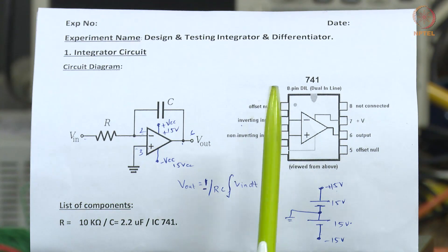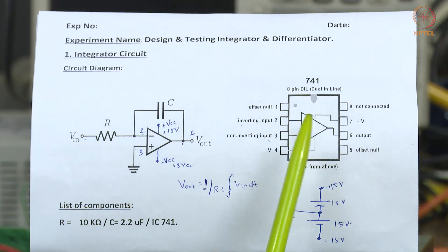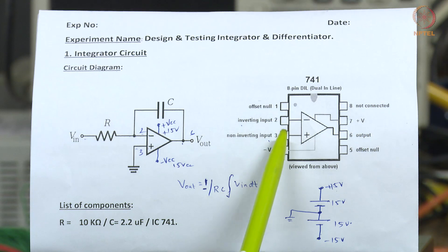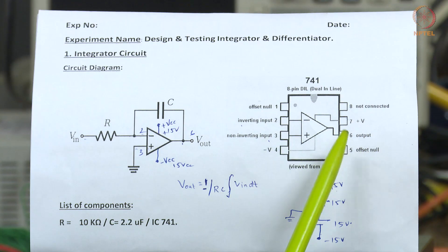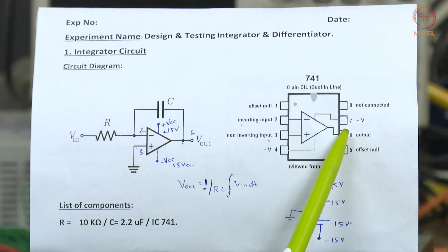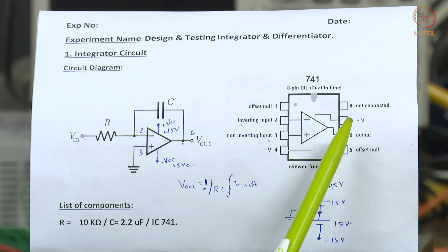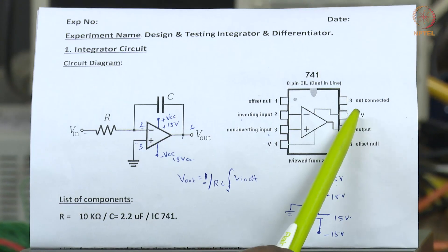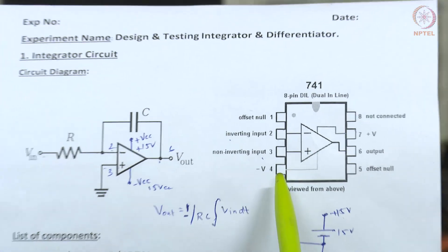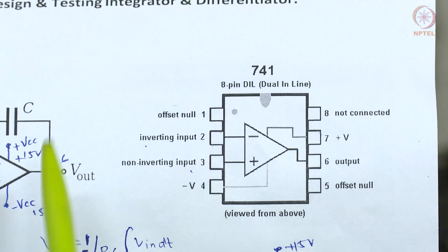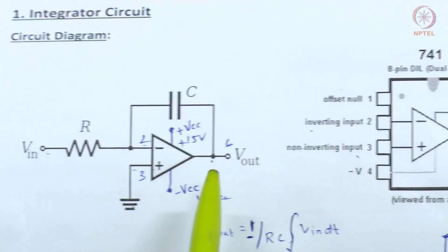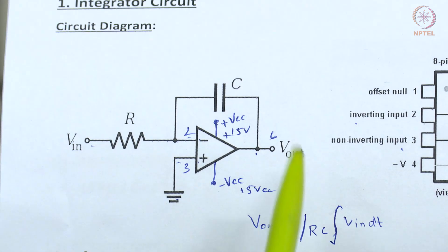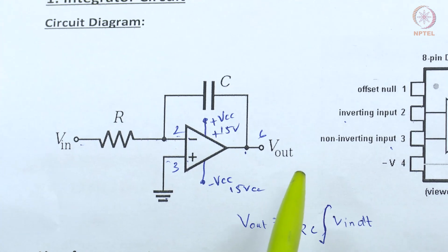Here in the 741, there are 8 pins. The second pin is inverting input, the third pin is non-inverting input, and the sixth pin is output. The IC has to be biased with positive and negative voltages — positive voltage to pin 7 and negative voltage to pin 4. By adding resistors or capacitors in input and feedback, we can design whatever circuit we require.